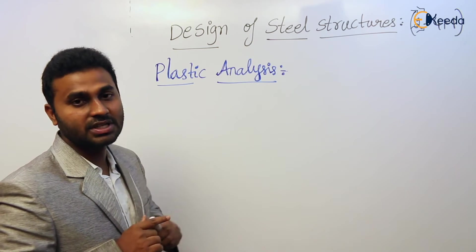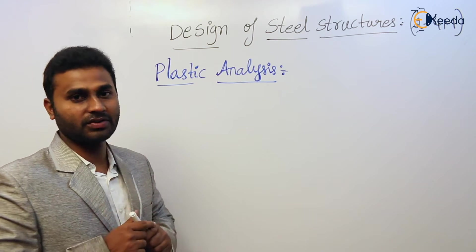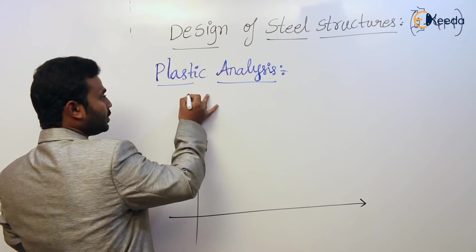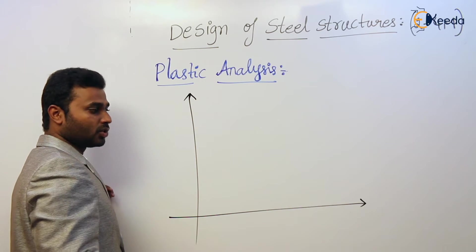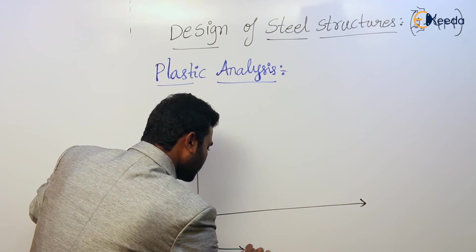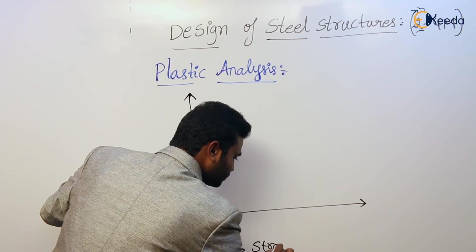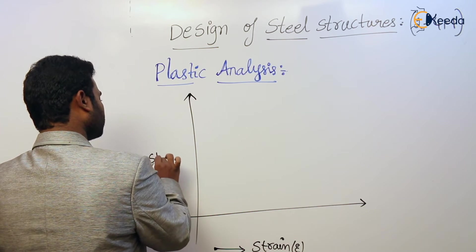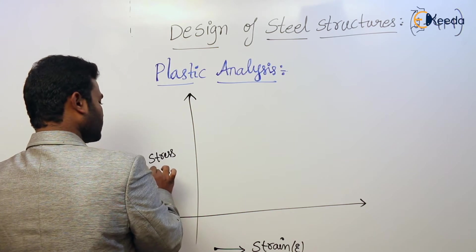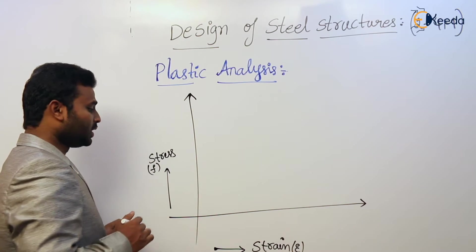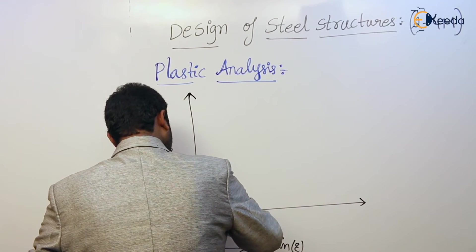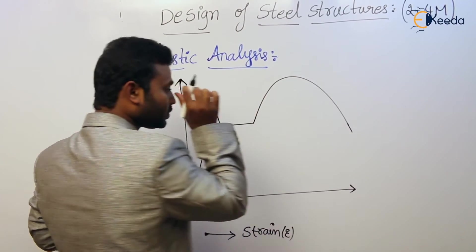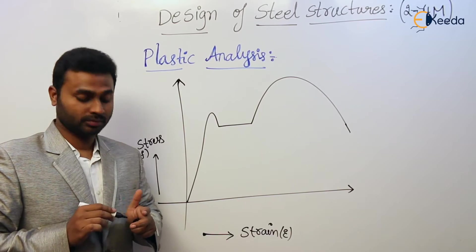Let us start the discussion of the stress-strain curve as discussed in strength of materials. If we observe the stress-strain curve of mild steel: on the x-axis we take strain, represented with epsilon, and on the y-axis we take stress, represented with small f or sigma. This is how the graph looks.